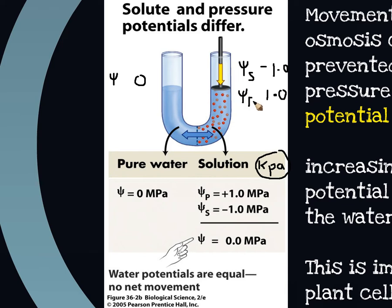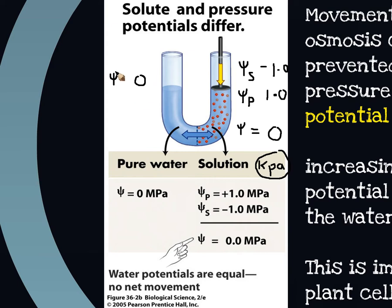If I apply a pressure of one, I essentially counteract the effect of those solutes. So the overall water potential would actually be zero. We would now have a water potential of zero on both sides.